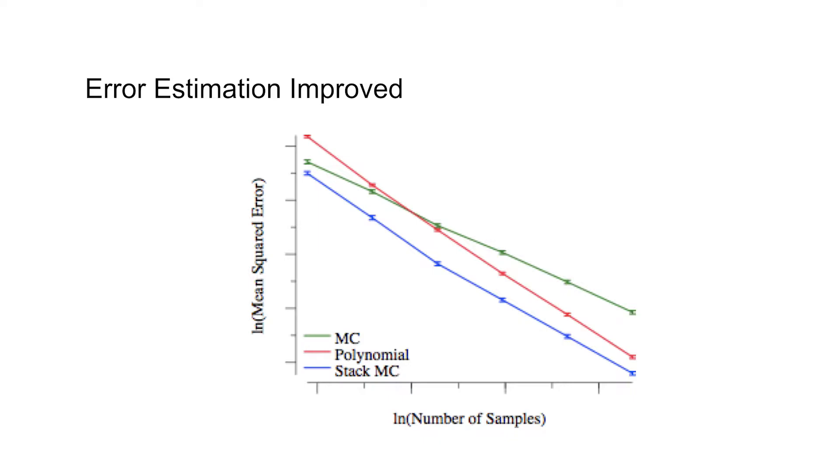Now what we see is that for all of these lines, the error goes down as we get more samples, right? That makes sense. The more data points we have, the better we're going to do. But what this also tells us is the green line was if we just used Monte Carlo. We only took the average values like we did with the die.